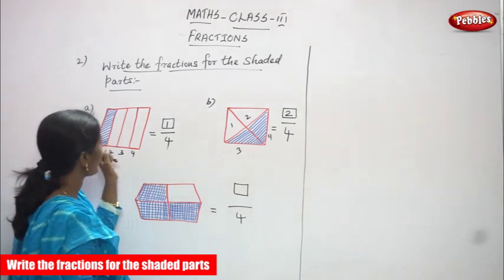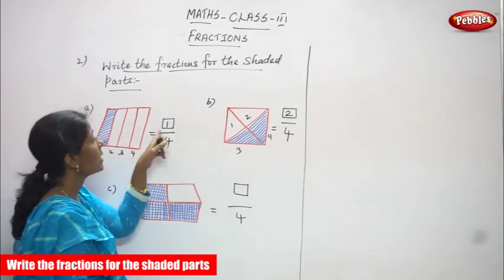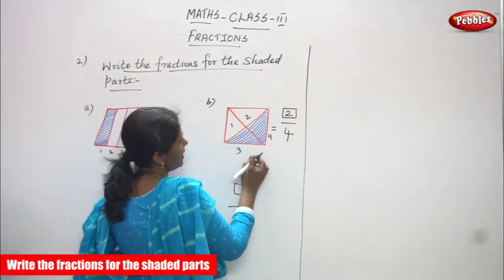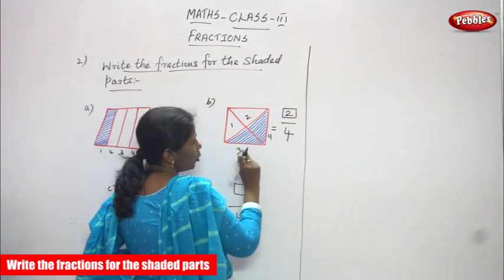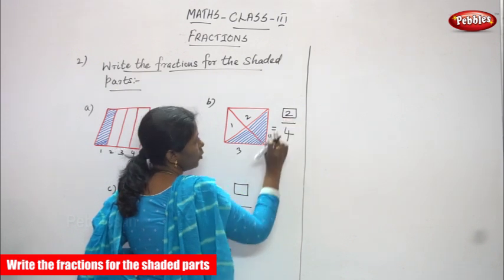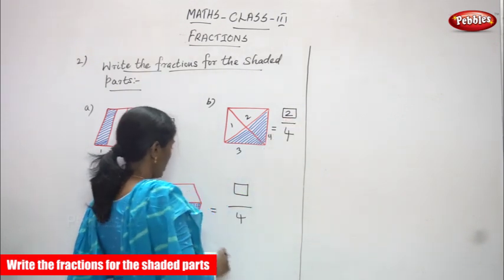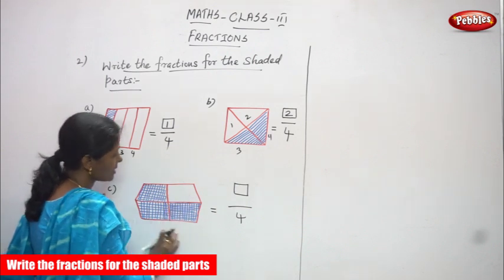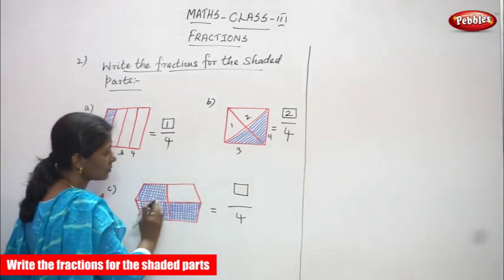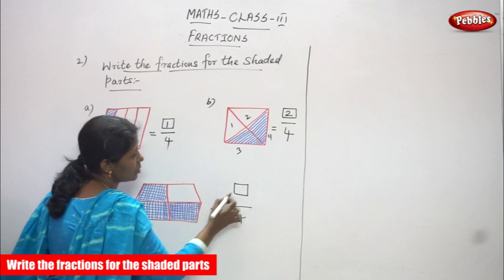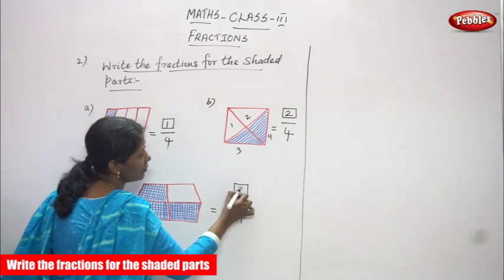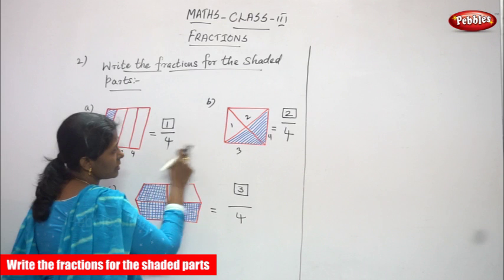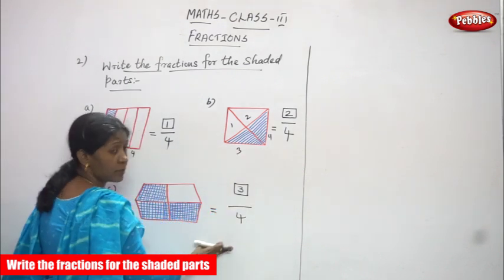Third question, C question: it is also four parts but I shaded only one part — that is what I've written, one in the box. B question: it is also four parts but I've shaded only two parts, so two in the box. C question: it's also four parts but I shaded three portions, so three in the box. Total parts is four for all sums.